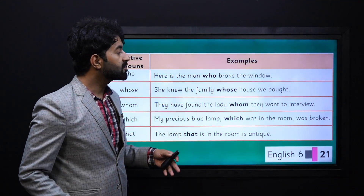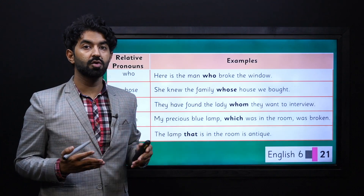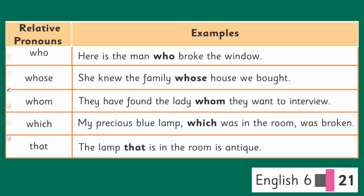Now let's look at some other relative pronouns and how they are used in different situations, from page 21 of your book. The first one is 'who.' Here is the example: 'Here is the boy who broke the window.' The word 'who' is your relative pronoun — it is relating to the man, the noun in the sentence, and telling us more about that noun in the later part of the sentence.